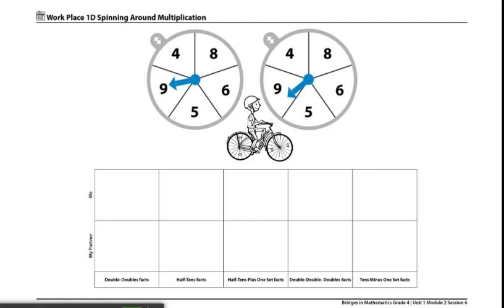During this game, students will decide which kind of multiplication strategy is most helpful to help them solve their facts. The different types of facts are doubles double facts, half ten facts, half ten plus one set facts, doubles doubles doubles facts, and ten minus one set facts.